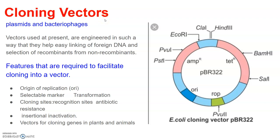Plasmids and bacteriophages have the ability to replicate within bacterial cells independent of the control of the chromosomal DNA. Bacteriophages, because of their high number per cell, have very high copy numbers of their genome within the bacterial cells. Some plasmids may have only 1 or 2 copies per cell whereas others may have 15 to 100 copies per cell. If we are able to link an alien piece of DNA with bacteriophage or plasmid DNA, we can multiply its numbers equally to the copy number of the plasmid or bacteriophage.